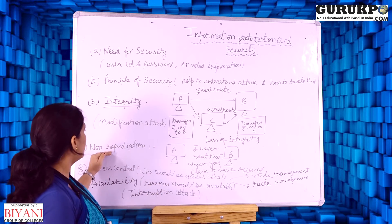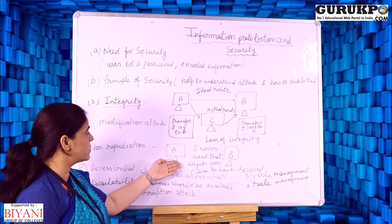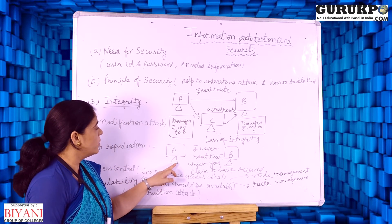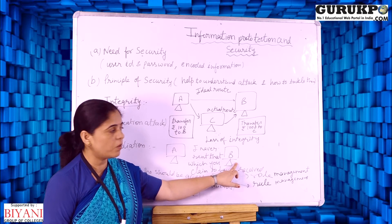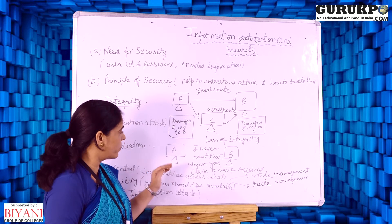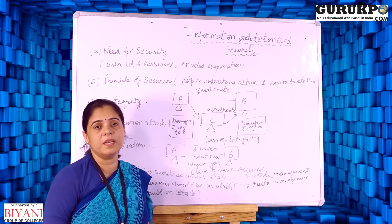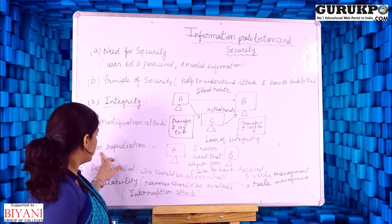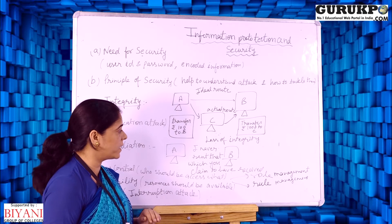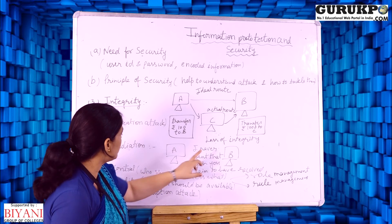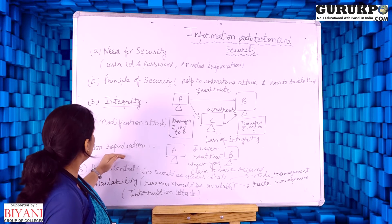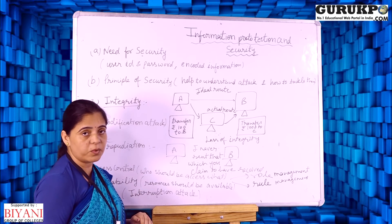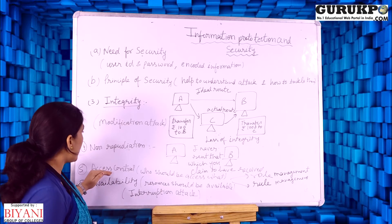The fourth principle is non-repudiation. Suppose user A transfers 100 rupees to B, but B receives zero money. Now B refuses, saying he never received money from A — this is non-repudiation: ignoring or denying receipt. This principle is very important when studying cryptography.